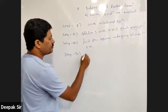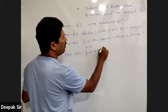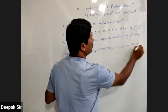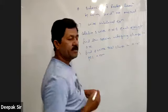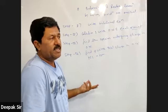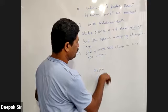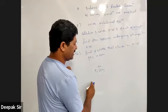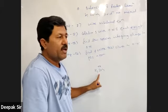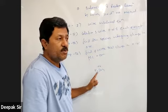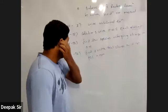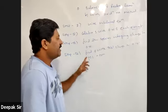Step number four — find and write the total change in oxidation number per atom. We have to find out and write the total change in oxidation number per atom. This has to be understood, clearly mentioned, and written. Step four: find out and write the total change in oxidation number per atom.